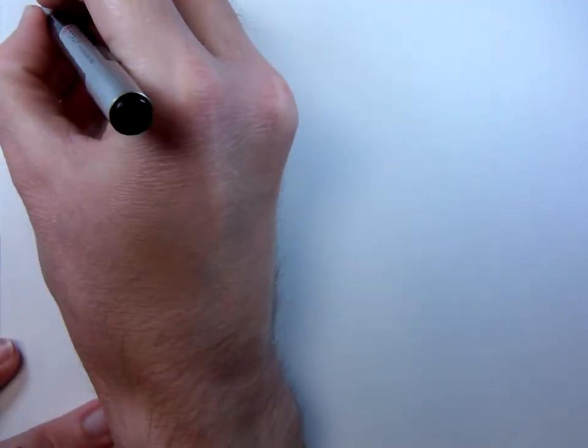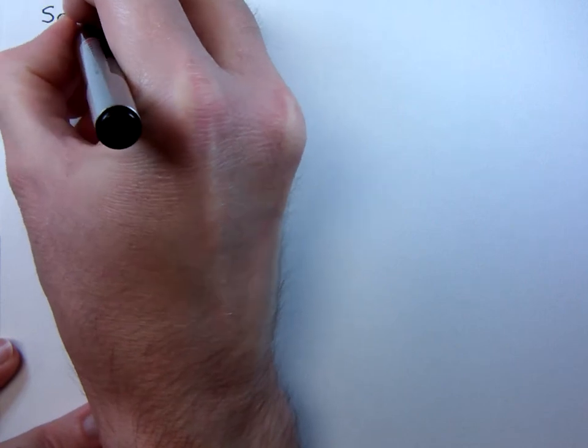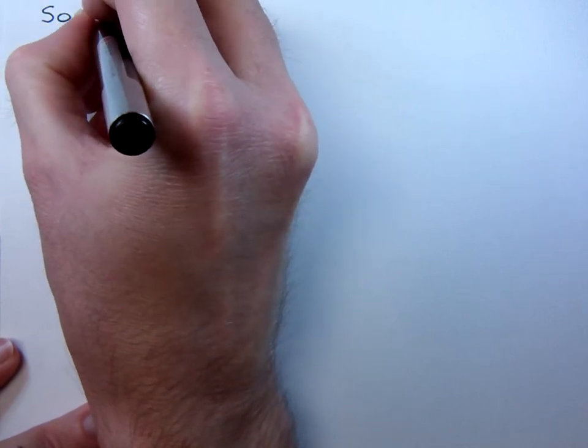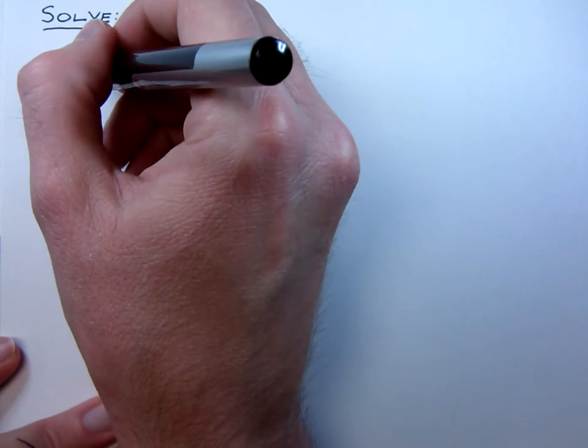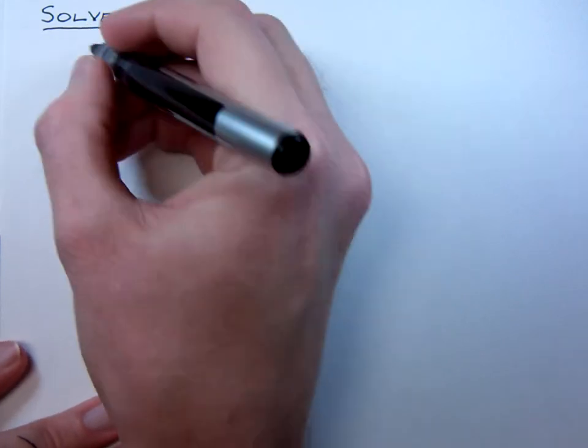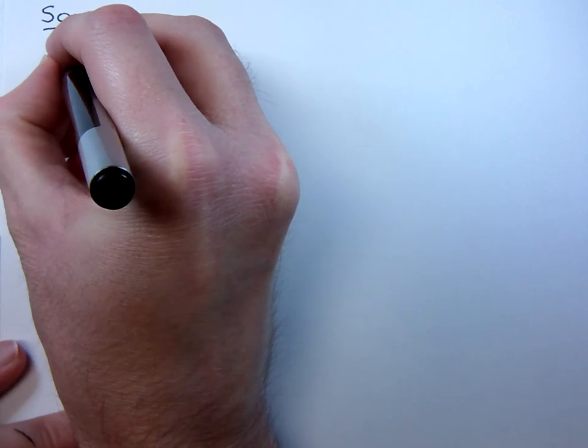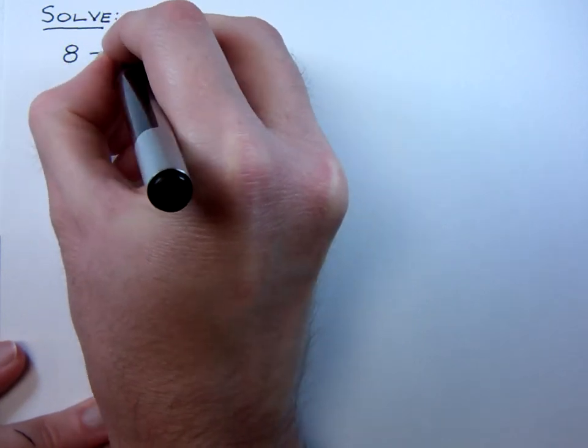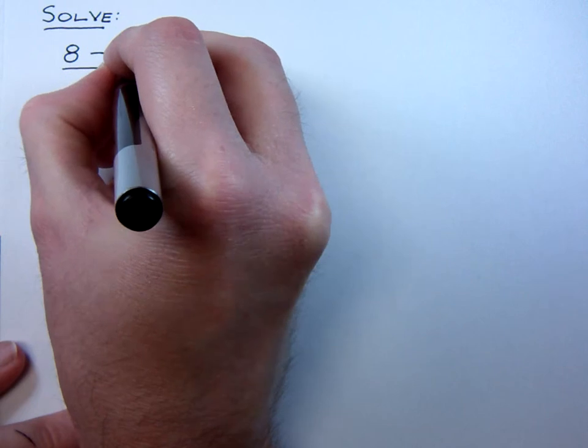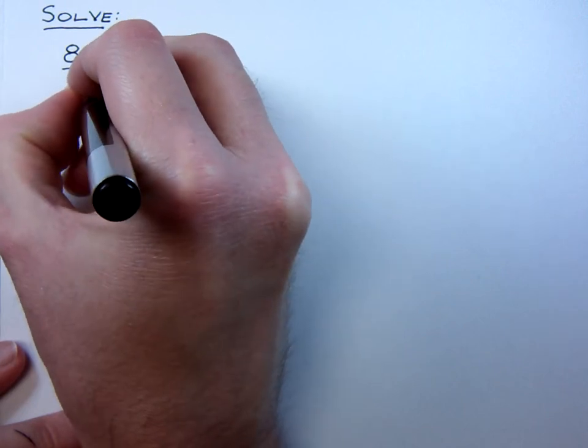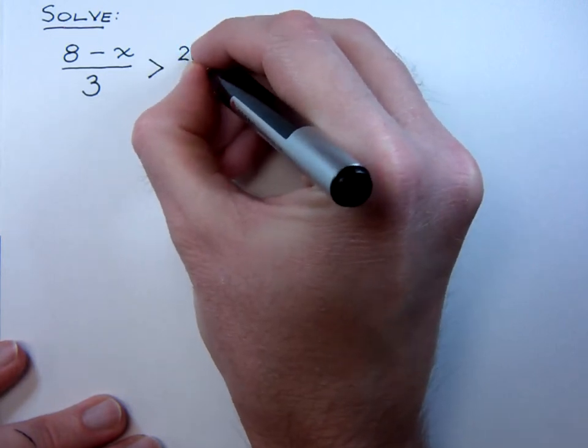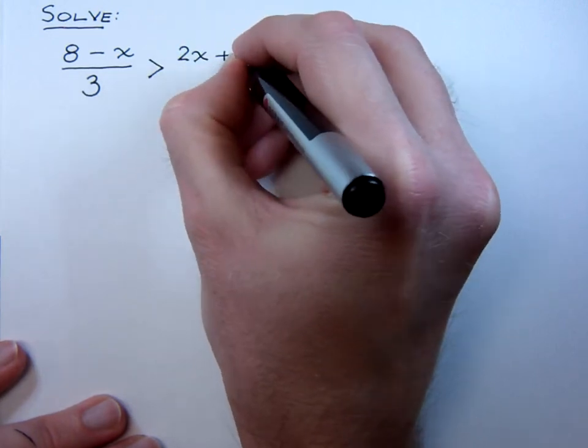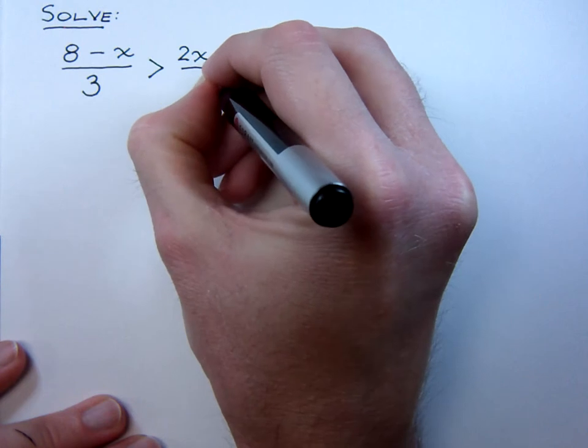Okay, let's try to solve an even more complicated inequality, keeping in mind that we're using the same steps, procedures, and thought processes that we've done for equations. So let's try this guy right here: 8 minus x all over 3 is greater than 2x plus 1 all over 5.